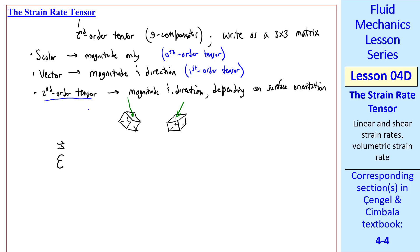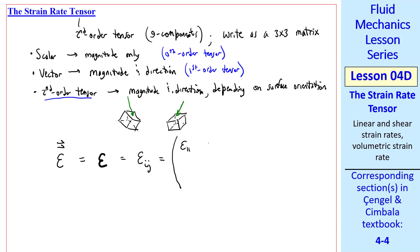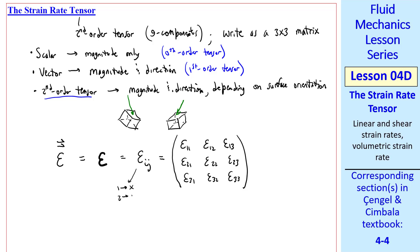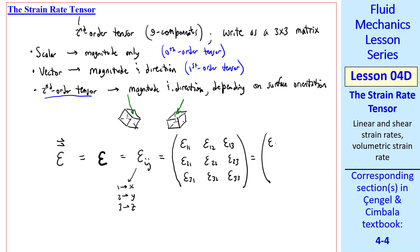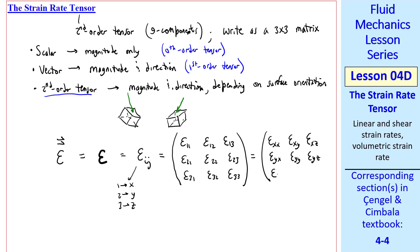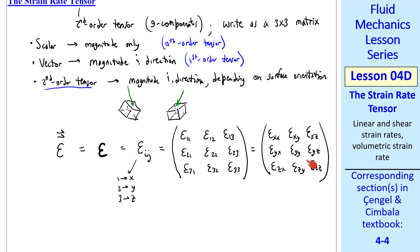We write the tensor as ε with a double arrow, or using bold font, or tensor notation ε_ij with components ε_11, ε_12, ε_13, ε_21, ε_22, ε_23, ε_31, ε_32, ε_33. You can think of 1 implying the x-axis, 2 the y-axis, and 3 the z-axis, so this can be written as ε_xx, ε_xy, ε_xz, etc. We've already defined ε_xx, ε_yy, and ε_zz as the linear strain rates, and we define the shear strain rates by the off-diagonal components.